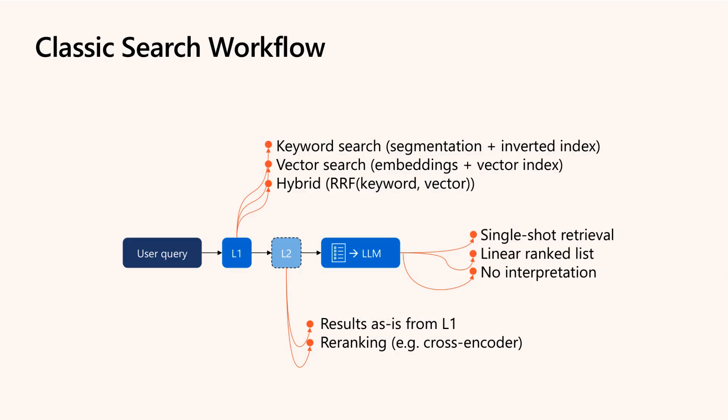Classical search schemes rely on a two-stage pipeline. A recall phase pulls candidate documents via keyword or vector search, followed by a re-ranking phase which refines results based on more precise relevance signals. Then a language model generates an answer from these refined results using a single-shot approach. While effective for many cases, this model struggles with queries needing iterative or staged retrievals.